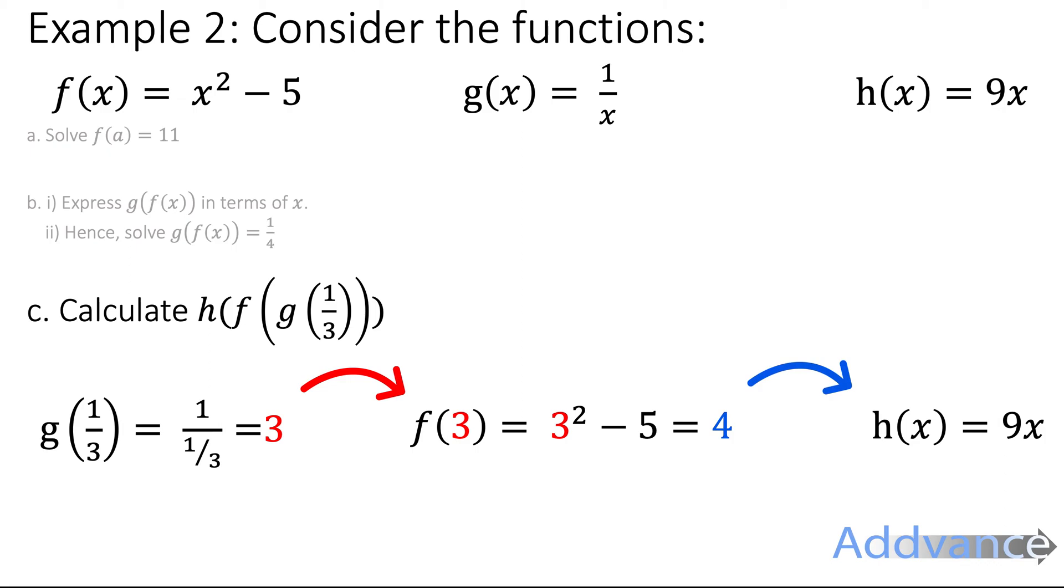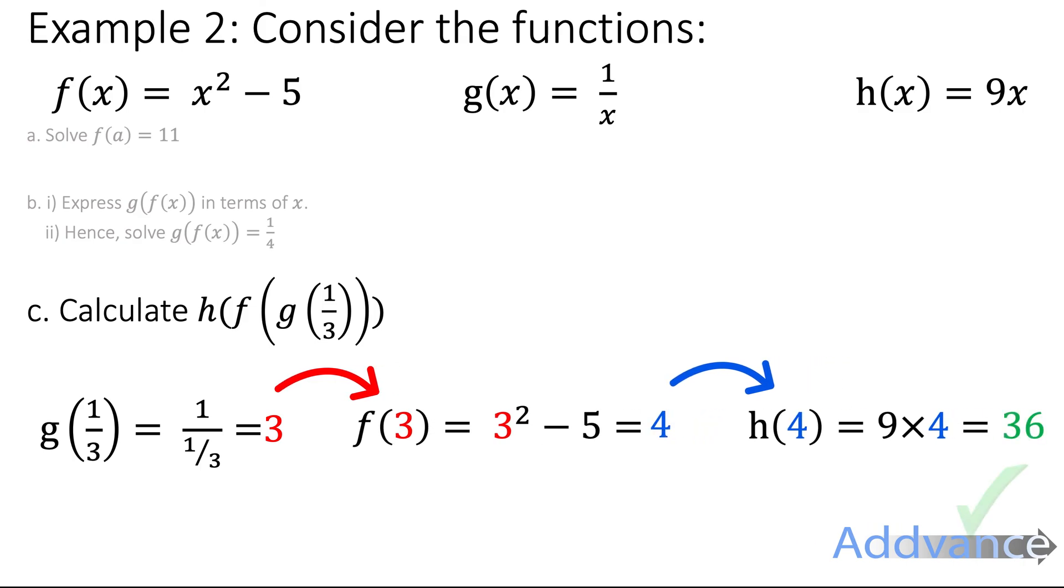We're going to put 4 into h now, like this, as 9 times 4, which is 36. And we have an answer. So h of f of g of a third is 36.